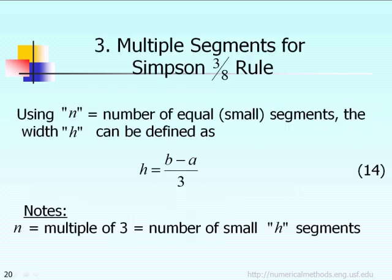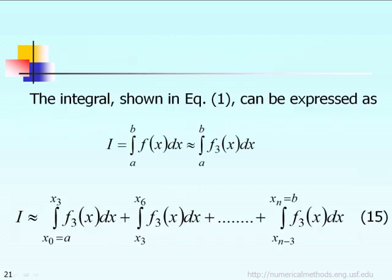The next thing is: can we derive the formula for the Simpson 3/8 rule but instead of using a single segment, we want to use multiple segments — let's say n segments. If we use n segments, h can be defined as b minus a divided by n, where n is a multiple of 3, like n equals 3, 6, 9, or 12. Note: there is a typing error in the slide — it should be divided by n, not divided by 3.